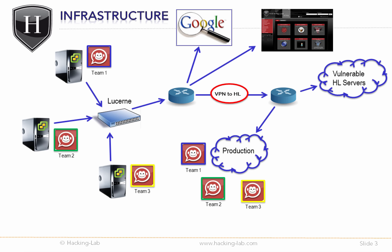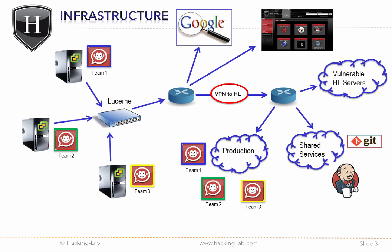Teams will have vSphere access to their local ESX server — essentially root access locally on their team server. However, teams will not get interactive access to the servers on the production network; no SSH, root, or any access on the production server. There will be a shared infrastructure that includes a Git repository server, a Jenkins build server, a bot, and some additional systems.